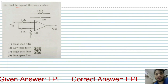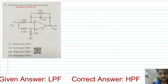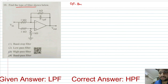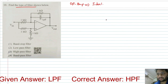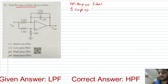Find the type of filter shown below. There is an op-amp circuit and nothing is given about the op-amp, which means the op-amp can be assumed to be ideal. Also, the circuit has only one capacitor.